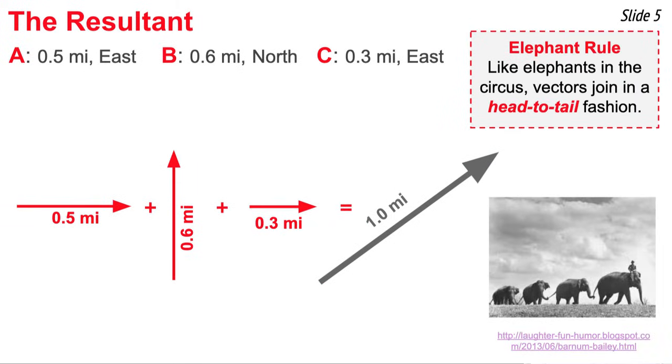This head-to-tail addition of vectors can be easily remembered if you get a mental picture of the elephants in the circus. The elephants join together with the head of one elephant holding onto the tail in the front. Just like when we add vectors, the arrowhead of one vector is attached or joined to the tail of the very next vector.